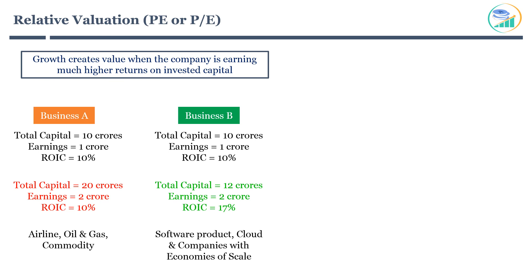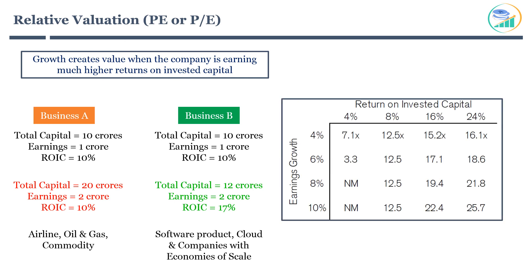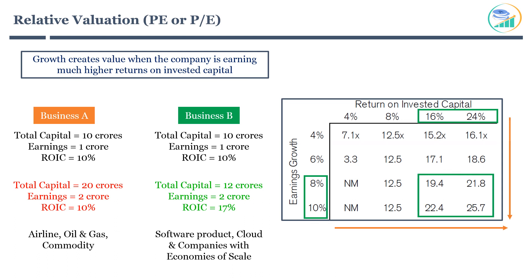Let's summarize the impact of earnings growth and return on invested capital on P/E ratio with this table — consider it for understanding purposes only. Companies expecting high earnings growth will demand a high P/E. However, companies with high expected earnings growth and high return on invested capital will demand an even higher P/E. You should be looking for companies with minimum 8% to 10% earnings growth and a minimum 15% return on invested capital. Ideally, you should expect a P/E ratio of 19 to 25 depending on growth prospects and return on invested capital. Always remember: the lower your purchase price and P/E ratio, the faster it will help to compound your money over the longer term.